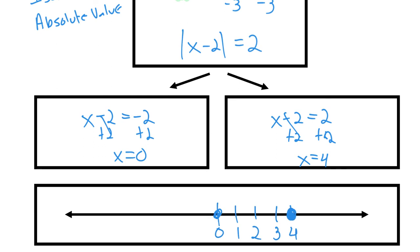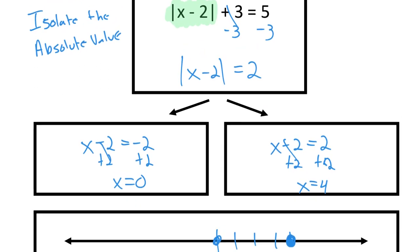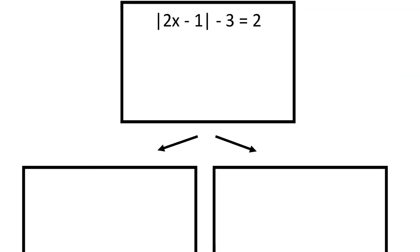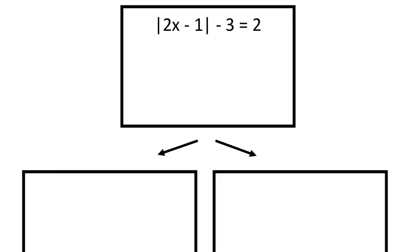So isolating the absolute value means before I set up my two equations, I get the absolute value by itself on one side of the equation. So I've got one more example here. For this example, I've got to isolate this part of the equation. The way I would do that before I set up my two equations, add 3 to both sides. Absolute value of 2x minus 1 equals 5.